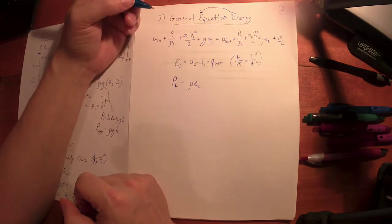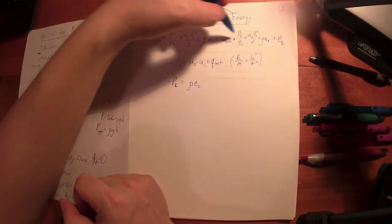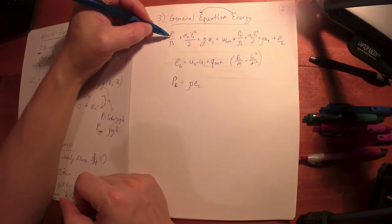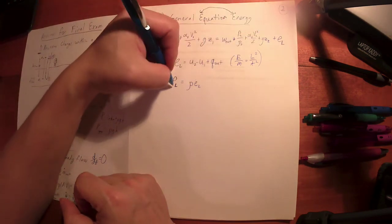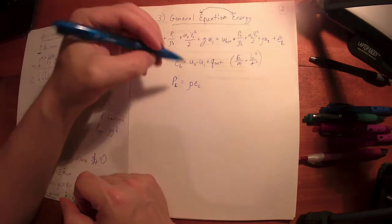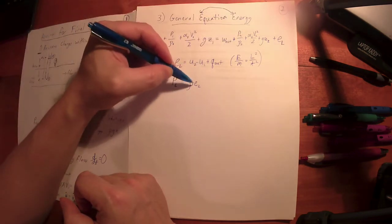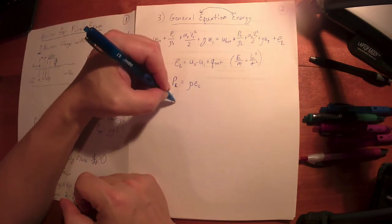I can also have what we call the pressure loss. The pressure loss is equal to density times the energy loss. So notice from this expression here, if I multiply each term by density, well if I multiply this term by density I just get pressure, and the same thing happens if I multiply each of these terms by the density of the fluid I get a pressure term. So the pressure loss between point one and two is simply the energy per unit mass loss multiplied by the density.